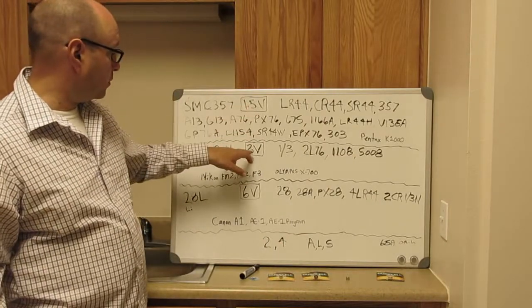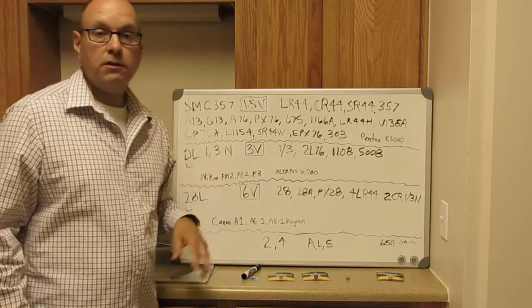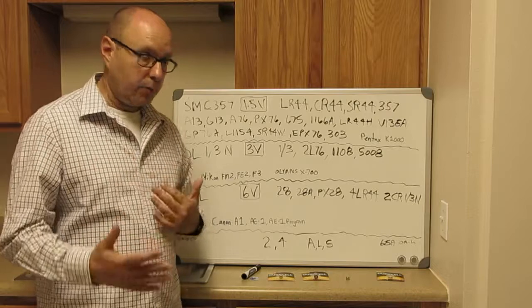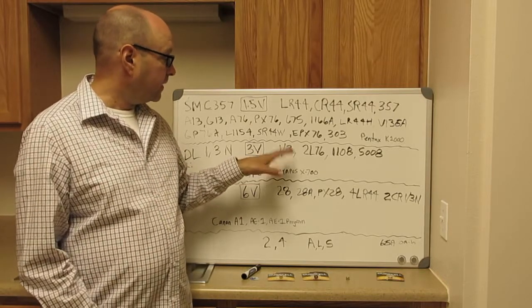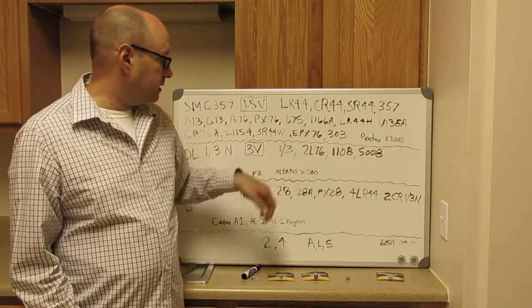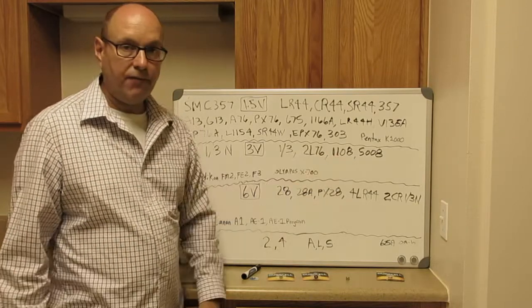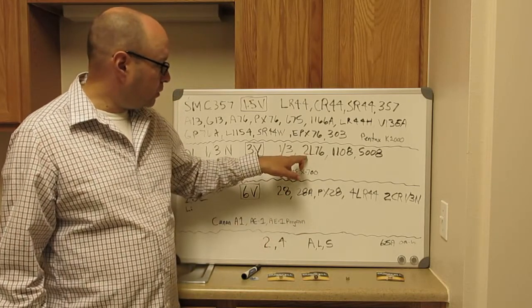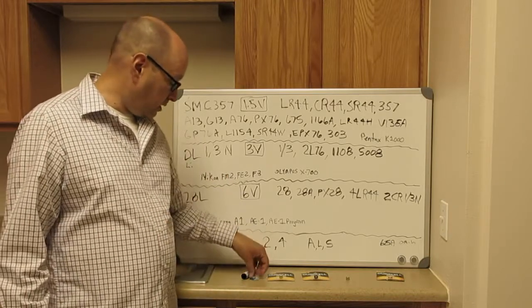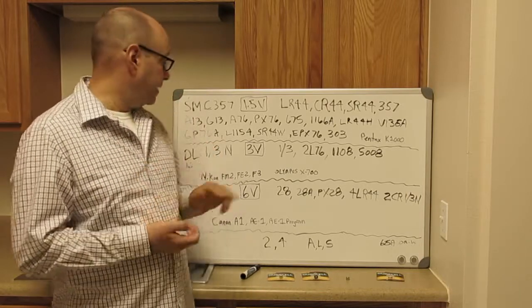Now let's move up to the 3 volt. So this is now like the Duracell DL 1/3N. It's three volts and it replaces or it's compatible with anything with one third. So it's 2L76, the 1108, and the 5008. The 2 in front of the battery means 2x or 2 times. You can take this battery and stack two of them together, two on top of each other, and that makes your 3 volts.